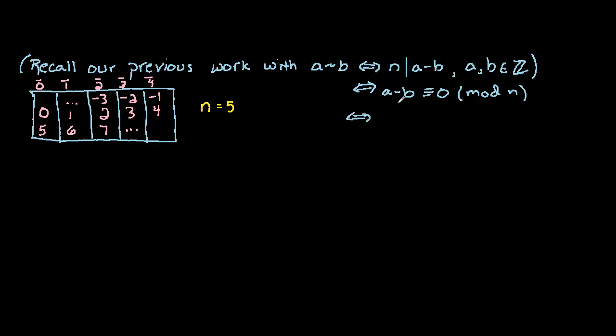We can add b to both sides, so this is the same thing as saying a is congruent to b mod n. In other words, a and b have the same remainder when divided by n.